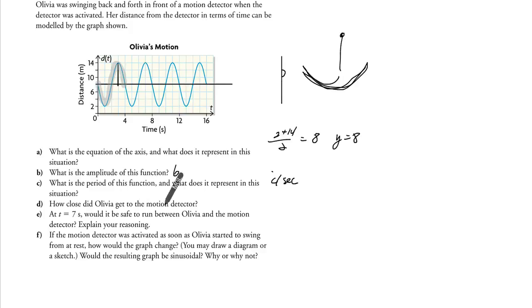How close did Olivia get to the motion detector? Okay, so the closer she got is 2 meters. Right here, 2 meters.